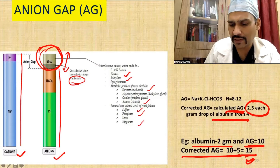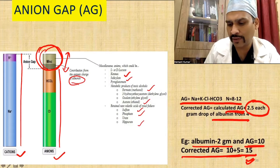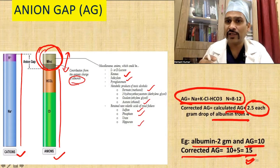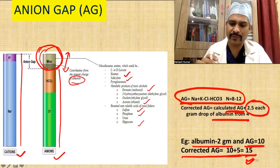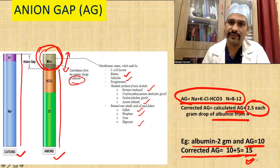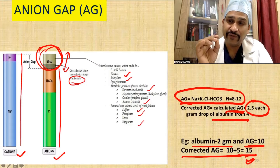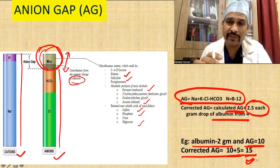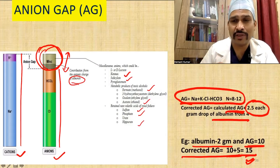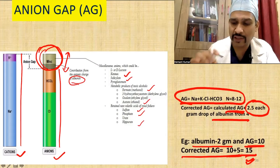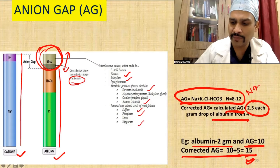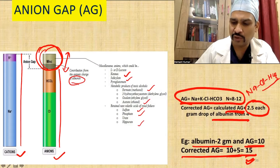To calculate the anion gap, the formula is: sodium plus potassium minus chloride minus bicarbonate. However, potassium is considered negligible so we omit it, giving us: sodium minus chloride minus bicarbonate. The normal value is 8 to 12.